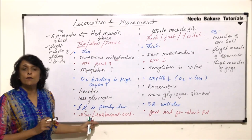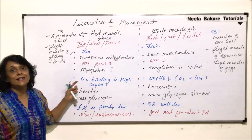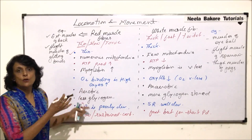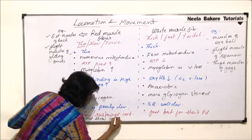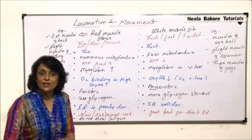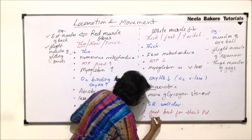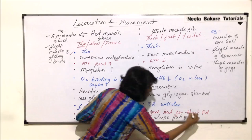Red muscle fibers do not undergo fatigue. One reason for fatigue is the accumulation of lactic acid, which occurs whenever there is anaerobic breakdown. In red muscle fibers there is aerobic respiration, so there is no accumulation of lactic acid and these muscles do not show fatigue. In white muscle fibers, most respiration is anaerobic, so there is accumulation of lactic acid and these muscles do undergo fatigue.